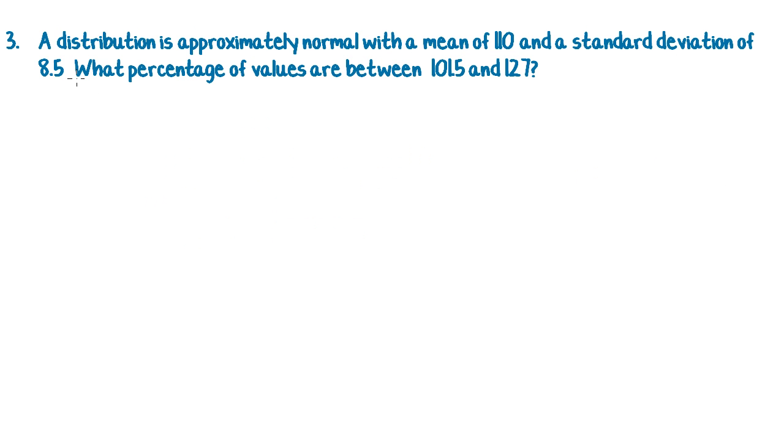So question three says, a distribution is approximately normal, which is great, there's those keywords, with a mean of 110 and a standard deviation of 8.5. What percentage of values are between 101.5 and 127? So I'm going to draw myself a bit of a bell curve, and put my mean in the middle at 110.